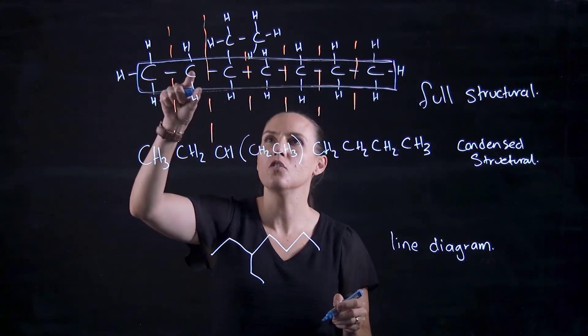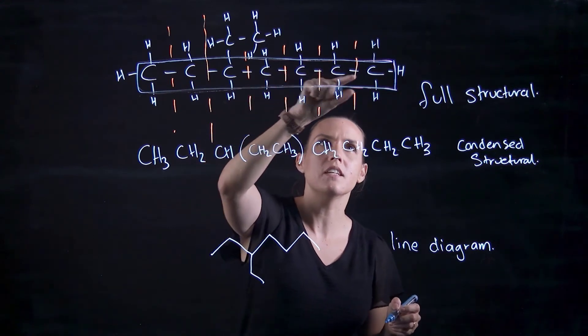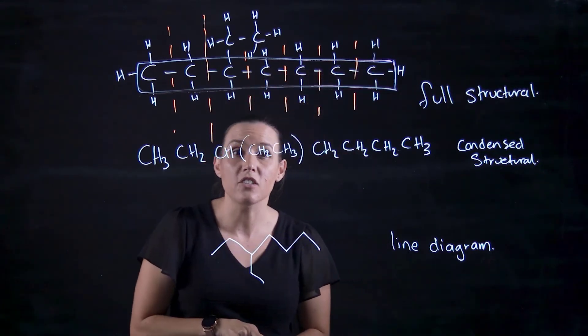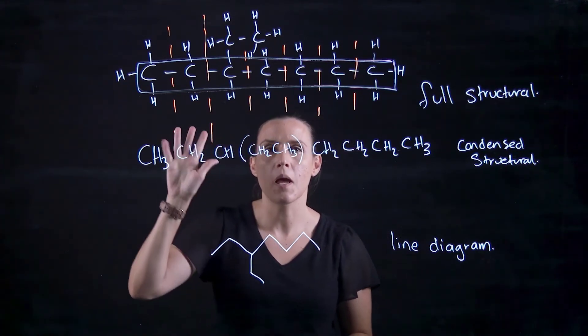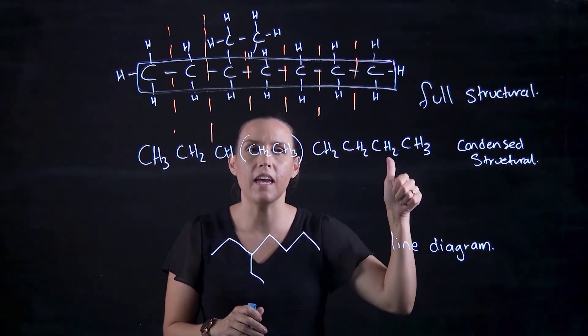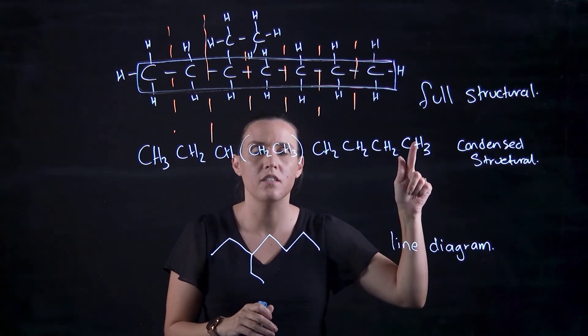Okay, so we've got one, two, three, four, five, six, seven. It's an alkane chain. It's got seven. So we've got meth, eth, prop, but, pent, and then we go hex, hept. So we're going for hept.